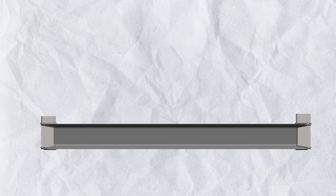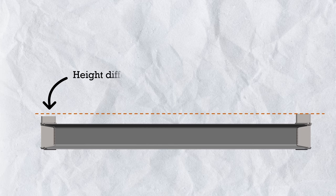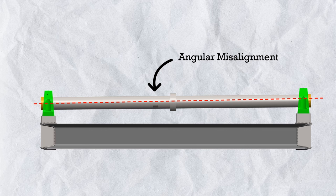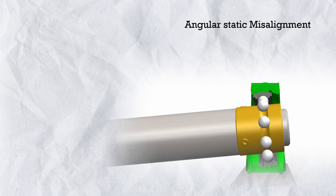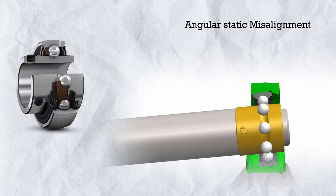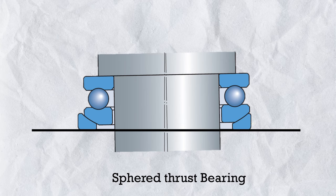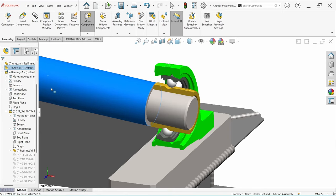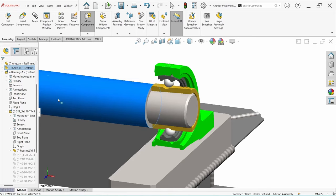Misalignment can also be angular. On a welded frame there can be a height difference between bearing block resting faces, creating an initial fixed angular misalignment. We need a bearing type that can accommodate this initial static angular misalignment — we call these alignment bearings, such as insert bearings (also called Y-bearings in SKF) and spherical thrust bearings. These can accommodate initial static misalignment because of their sphered outside surface.